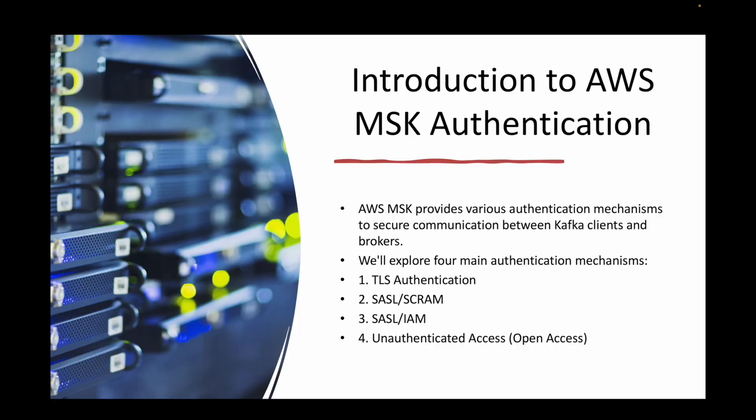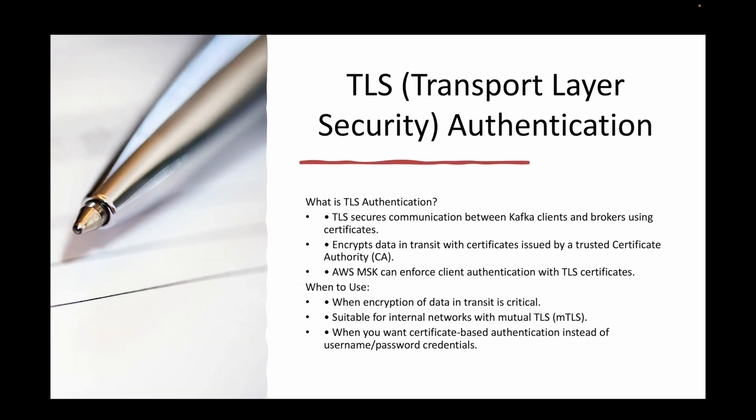When you come to AWS MSK, we have four types of authentication — but when you say four, it's not actually four. The fourth one is unauthenticated access, so you can't really say it's four ways to authenticate. The first one is TLS-based authentication, the second one is SASL/SCRAM authentication, the third one is SASL/IAM authentication, and the fourth one is unauthenticated.